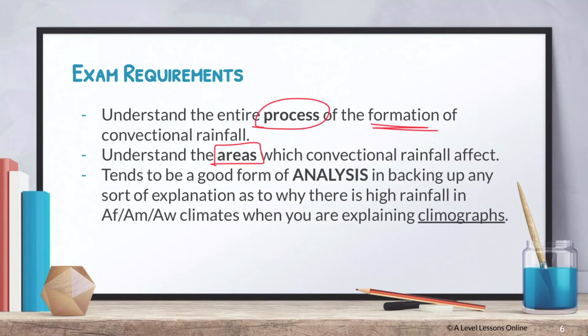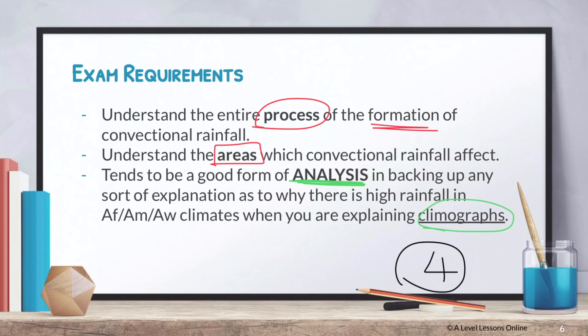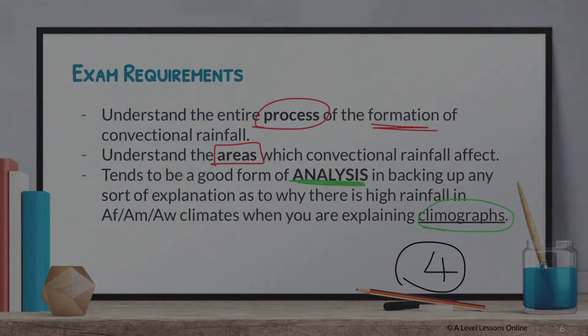Convectional rainfall is also a good form of analysis when discussing climographs. For instance, if asked why there is extremely high rainfall in countries such as Singapore, you can bring in the fact that it results from convectional rainfall, then explain the full process. This could be a four-mark question, so even if not explicitly asked, go ahead and explain how it works — that will definitely get you the marks.